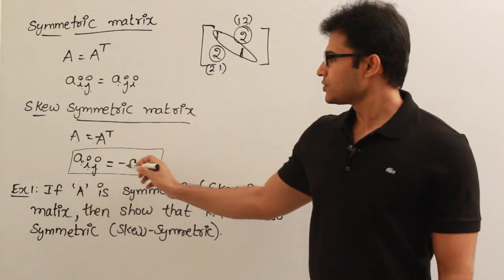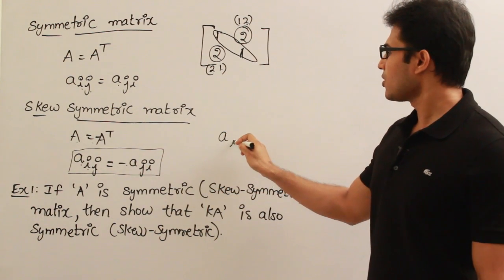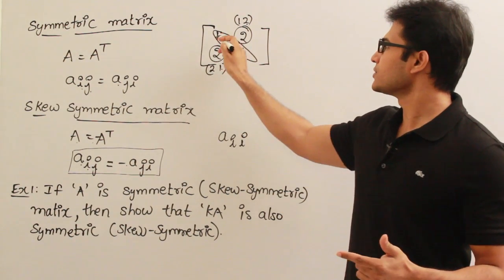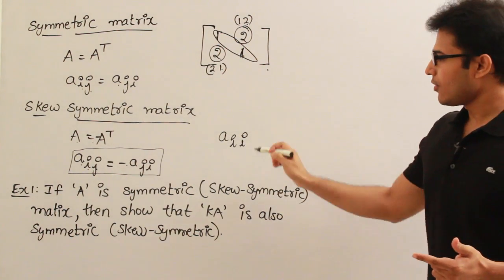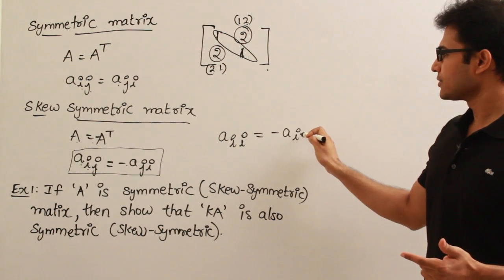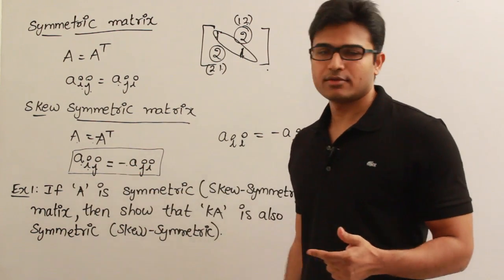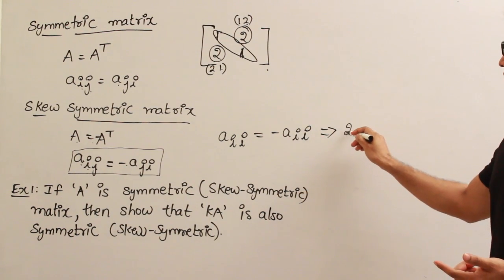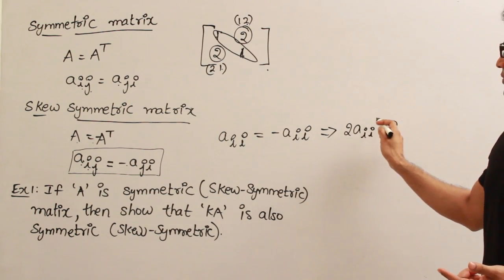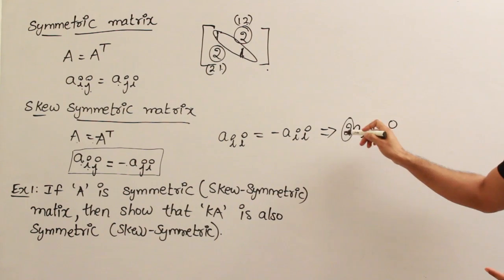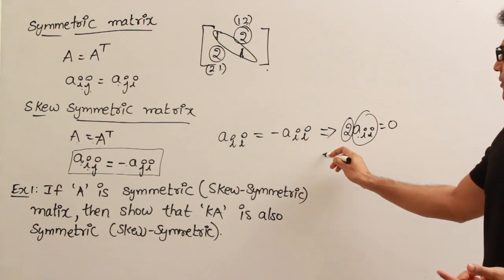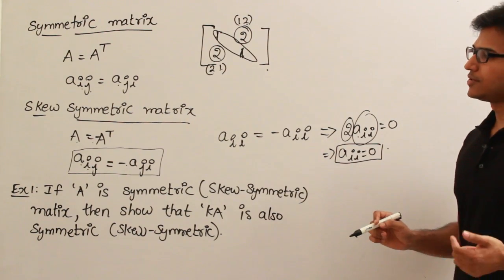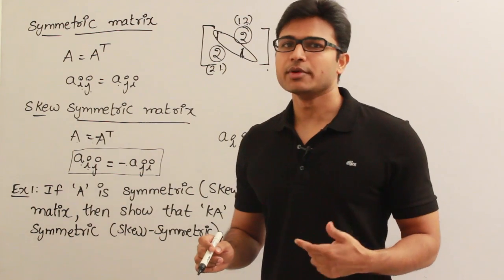What happens to the principal diagonal? All principal diagonal elements will be of the form Aᵢᵢ — present in first row first column, second row second column, like 1,1; 2,2; 3,3. Now, Aᵢᵢ should equal minus Aᵢᵢ. So 2 times Aᵢᵢ equals 0. Since 2 is not equal to 0, this holds only when Aᵢᵢ equals 0. Which means, if a matrix has to be skew-symmetric, then all elements in the principal diagonal must equal 0.